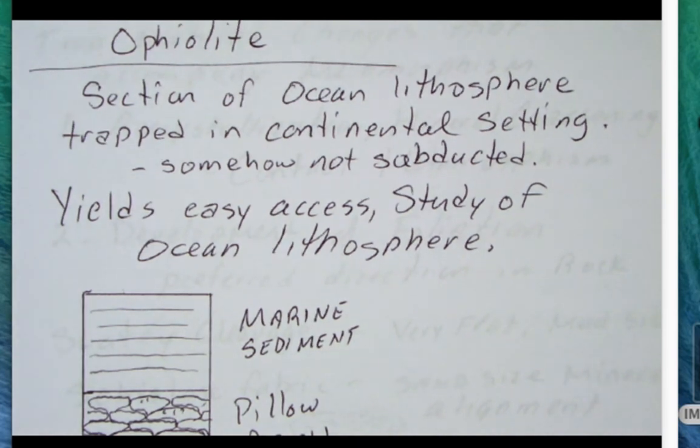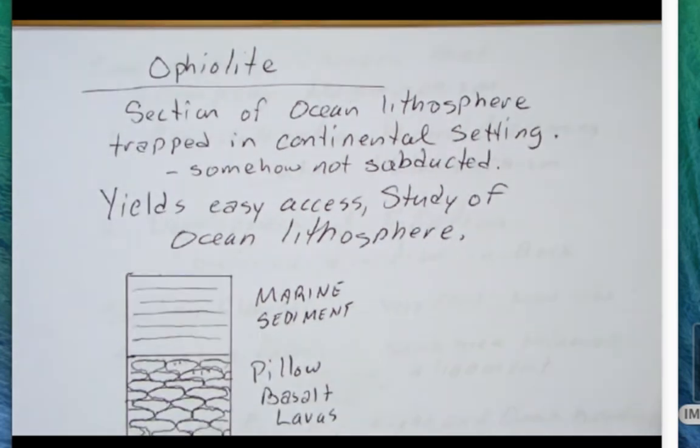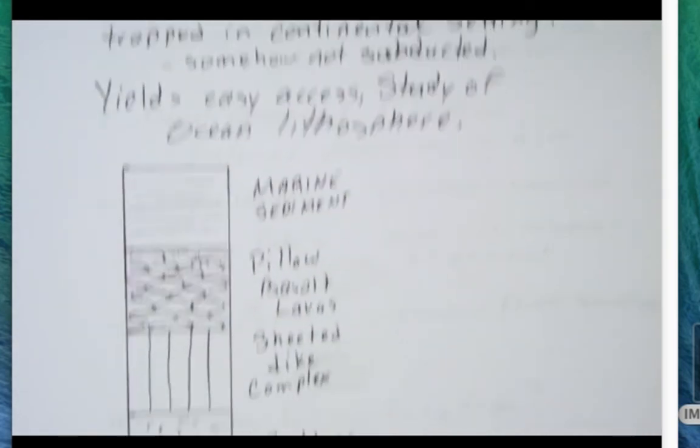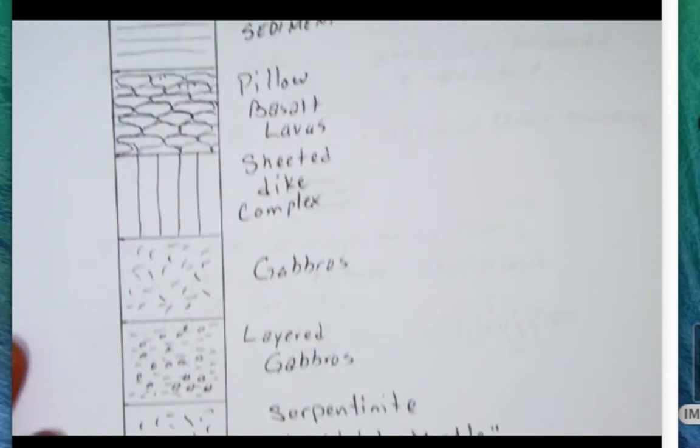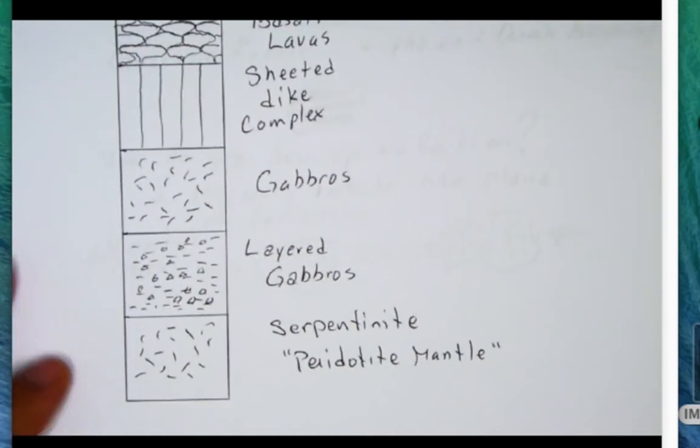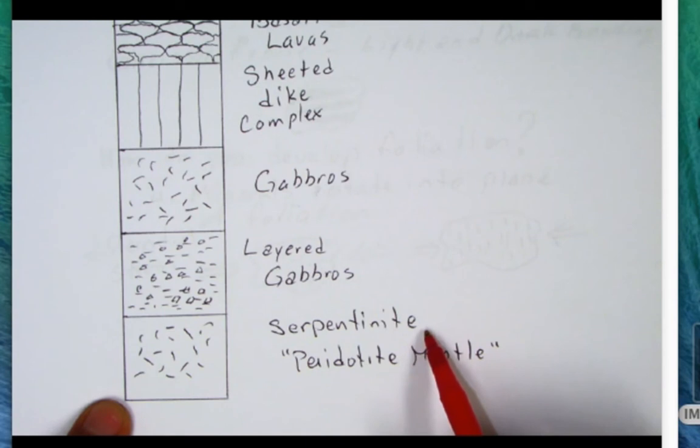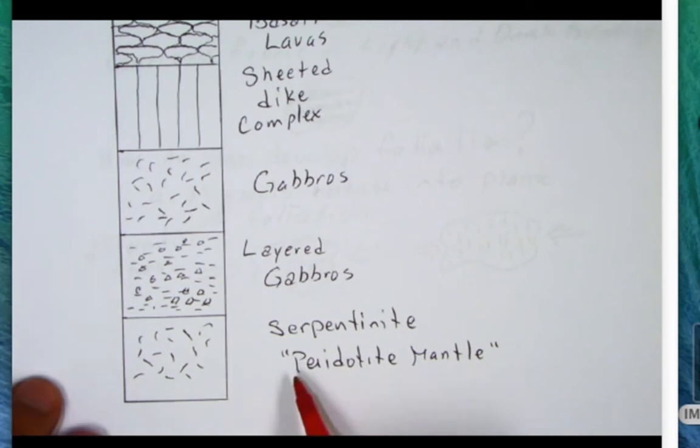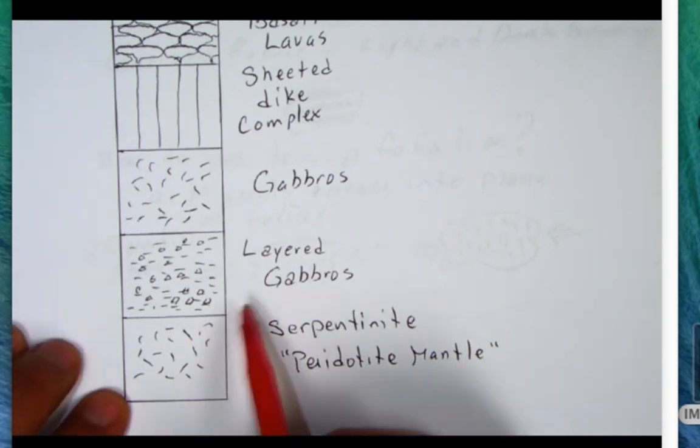If we look at the cross section and the different layers, we find that at the bottom we have serpentinite. Remember the protolith of serpentinite is that peridotite mantle rock, so this represents mantle.